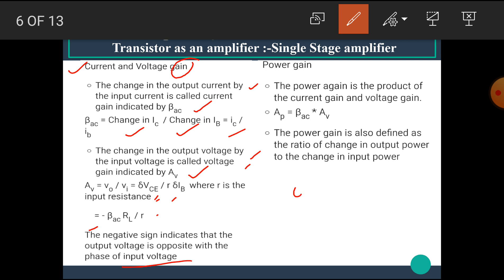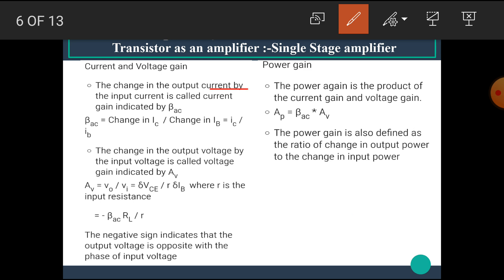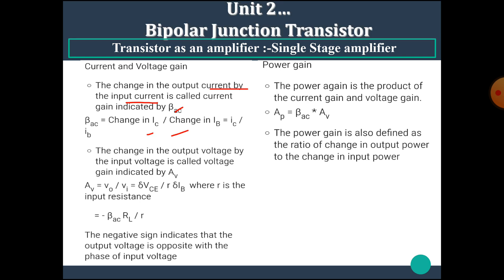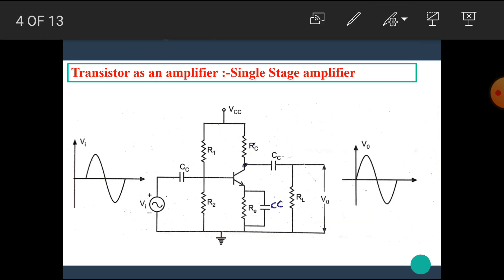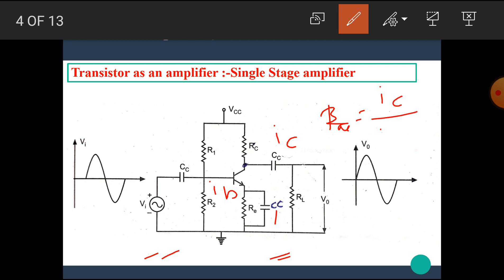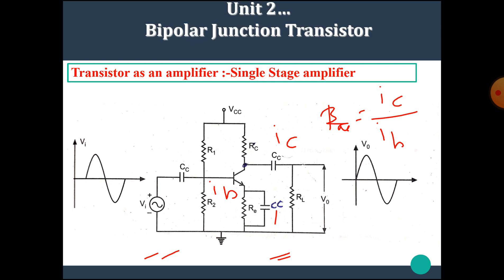The gain term means the ratio of output to input is known as gain. Current gain means the ratio of output current to the input current. Voltage gain means the ratio of output voltage to the input voltage. The current gain is indicated by beta AC; beta AC is equal to change in IC upon change in IB. In this diagram, the output side has collector current IC and the input side has base current IB. Hence, the current gain beta AC is given by IC upon IB.